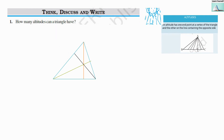Now let us look at questions based on altitude. First question: how many altitudes can a triangle have? In triangle ABC we have three altitudes. For vertex A, AE is an altitude; for vertex B, BG is an altitude; for vertex C, CD is an altitude. So every triangle has three altitudes.